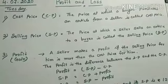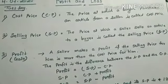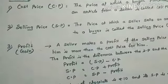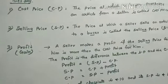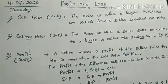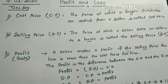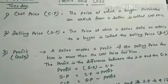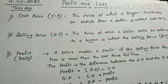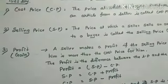The price at which a buyer purchases an article from a seller is called the cost price. Selling price: the price at which a seller sells an article to a buyer is called the selling price. The short form is SP.